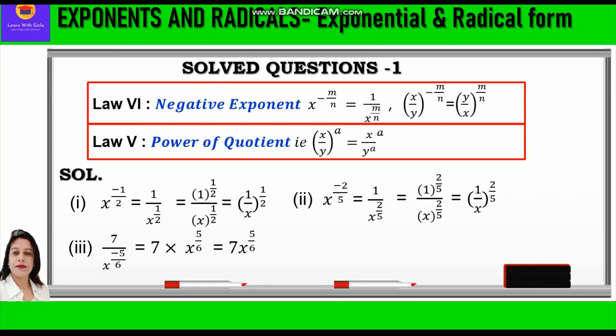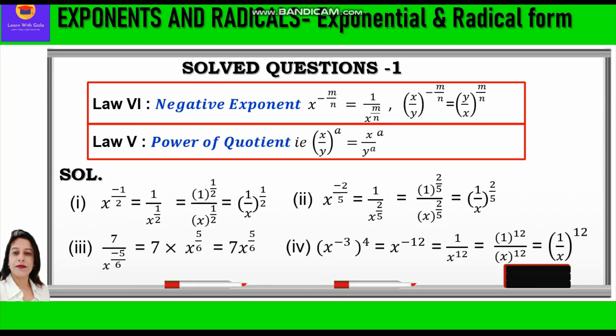Third part: 7 upon x raised to power minus 5 by 6. Here the negative exponent is in the denominator. To make it positive, we reciprocate the base, bringing x raised to power 5 by 6 to the numerator. So we write 7 times x raised to power 5 by 6, which equals 7x raised to power 5 by 6. Fourth question: (x raised to power minus 3) whole raised to power 4. When two powers are nested, we multiply them, giving x raised to power minus 12, which equals 1 by x raised to power 12, and further (1 by x) whole raised to power 12.